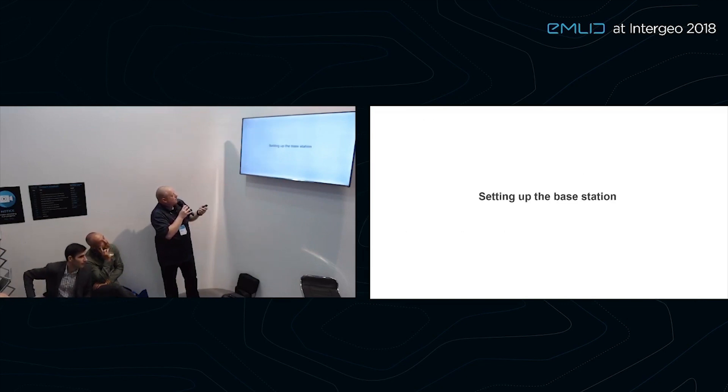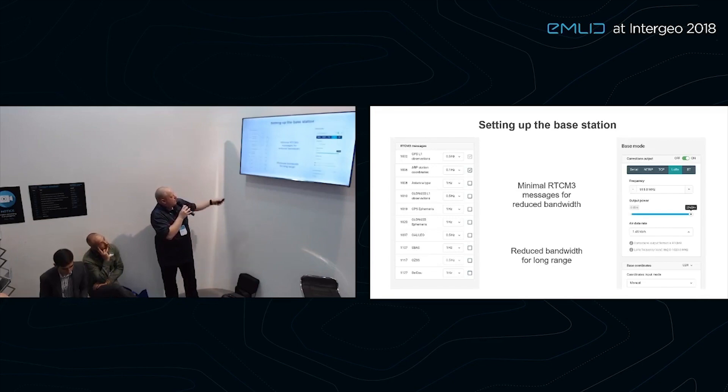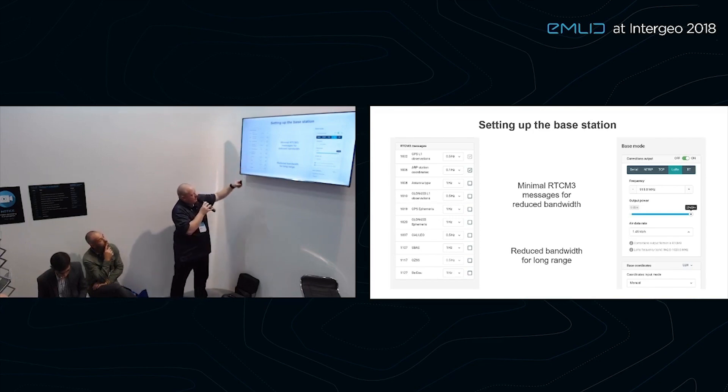Setting up the base. Here's that in picture form. In the ReachView software, we just got the top two boxes checked and the frequency set. Normally when you're having close operations, you'd have several more of these selected. And over here is the LoRa radio setup. We have our frequency set at 915. Some of you would probably be better off with 868 for your country. And then we have the power bar slid to the max. And our air data rate is set to one of the lowest values here at 1.46 kilobits per second.